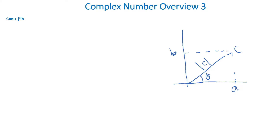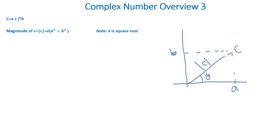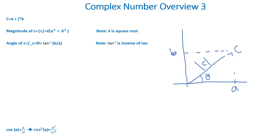If we have c equal to a plus j times b, where a and b are real numbers, then the magnitude of c is equal to the square root of quantity a squared plus b squared. Then the angle of c is the inverse tan of quantity b divided by a.